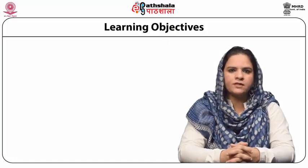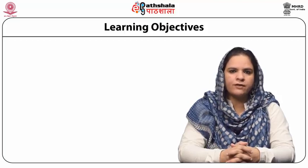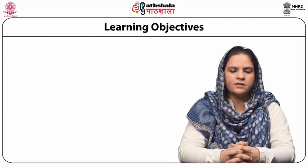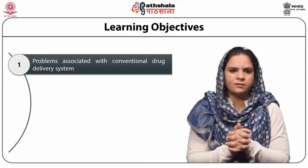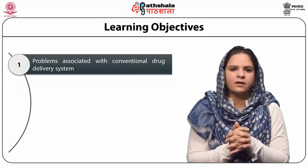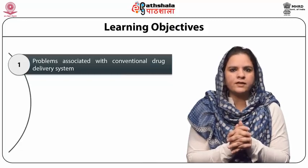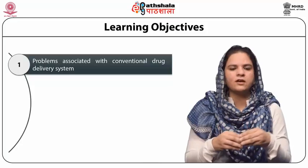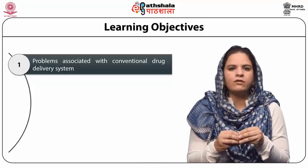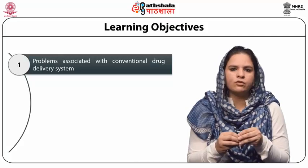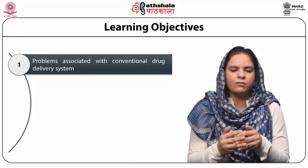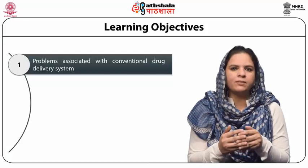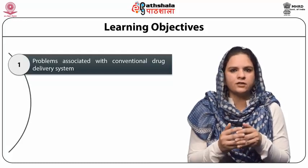Before we start with the module discussions, let us find out our learning objectives. Before getting into the details of controlled drug delivery systems, we would like to understand the problems associated with conventional drug delivery systems. As pharmaceutical students, we know that the primary requirement of disease treatment is the availability of the drug in the blood system. For that, we take formulations — a tablet, capsule, pill, or suppository — which releases its dosage into the system so that the blood has the amount of drug needed for treatment.